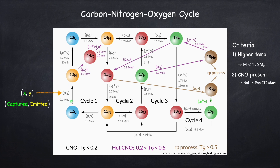This 2 MeV here is the average energy released by the gamma ray, by the photon. So just to recap: this is saying carbon-12 is going to capture a proton and emit a photon which on average will have an energy of 2 MeV, and this will convert the carbon-12 into a nitrogen-13 nucleus.